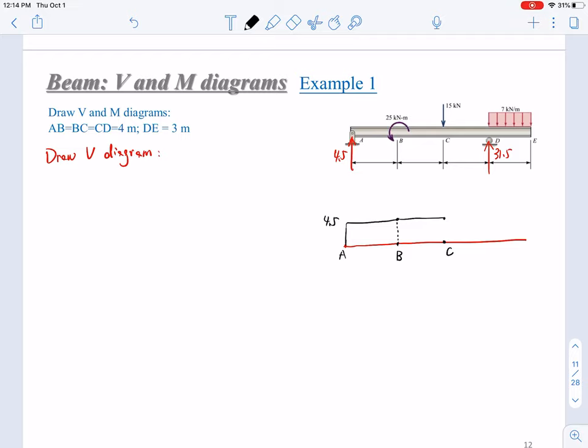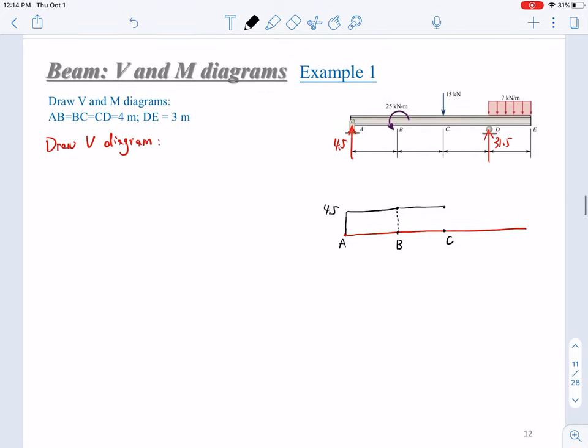At point C, you will encounter a downward concentrated force, 15 kilonewtons. So this will go downward to here, go downward by 15. So from 4.5, downward by 15, it will go to negative 10.5.